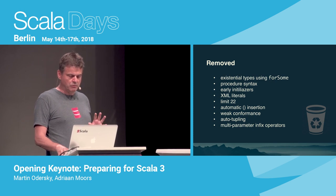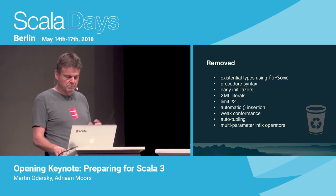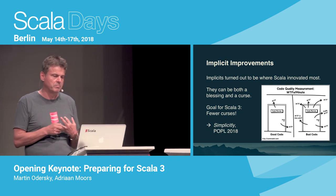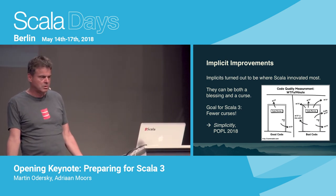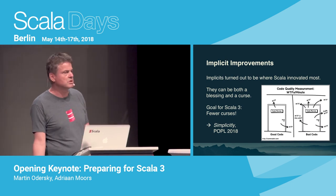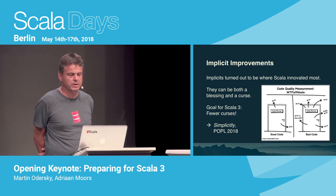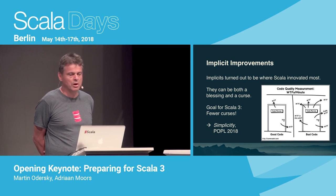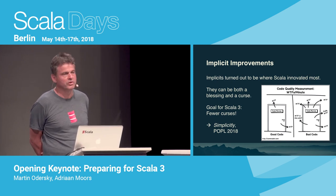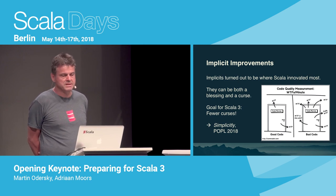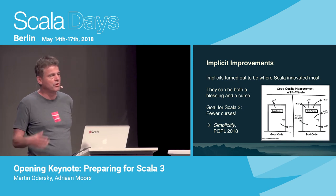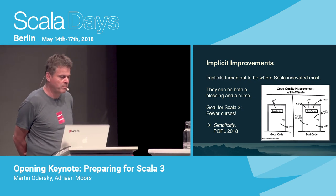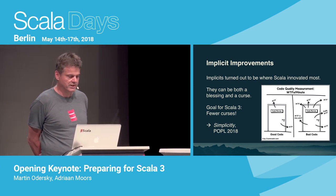But the biggest thing among all this feature list — if I should pick the most important part — it's really the improvements to implicits. Implicits turned out to be where Scala innovated most. It wasn't so prominent at inception, but during the development of Scala, implicits got a lot of refinements: first for type inference, then implicit classes, context bounds — all of these were added over the years. I believe implicit can be both a blessing and a curse, and the goal for Scala 3 is fewer curses.